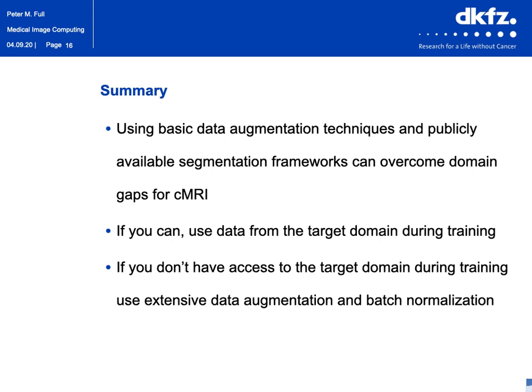To sum up: for cardiac MRI imaging, it is sufficient to use publicly available segmentation frameworks paired with basic data augmentation techniques, even if minor code changes are necessary. If you have access to the target domain during training, that is ideal. If you don't have access to the target domain during training, you should use extensive data augmentation and batch normalization.